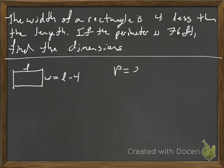Our perimeter is 2 length plus 2 width. They tell us the perimeter is 76. 76, we don't know what the length is, it's 2L, plus 2, and then the width there is length minus 4.